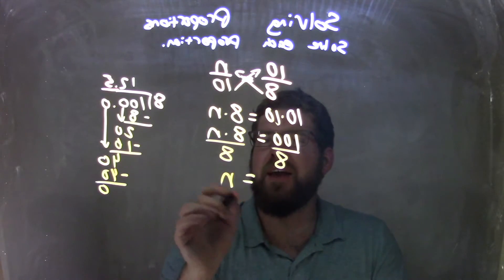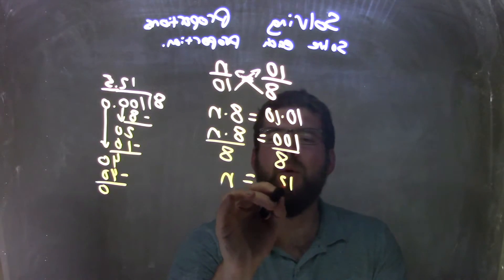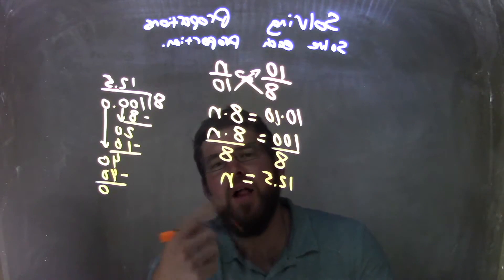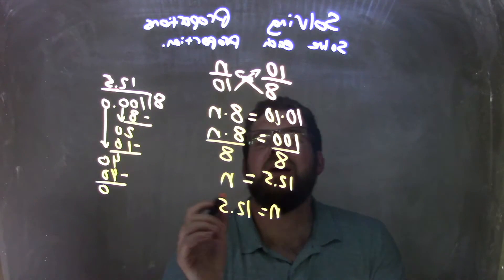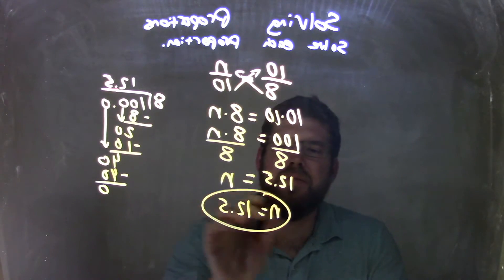And so we have n here on the right and 12.5 on the left. Let's rewrite this with n coming first. n equals 12.5. And that, folks, is my final answer.